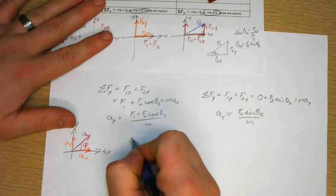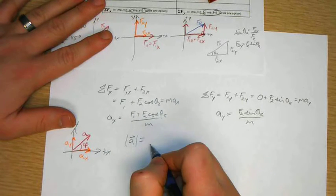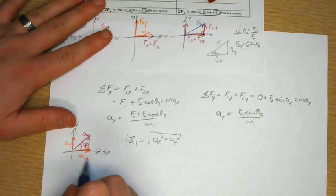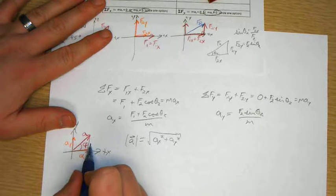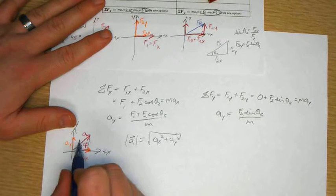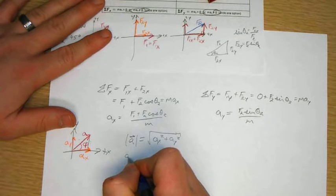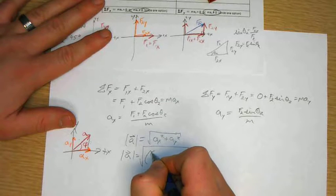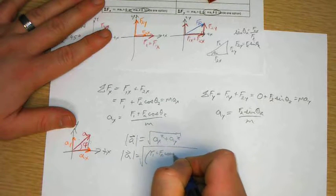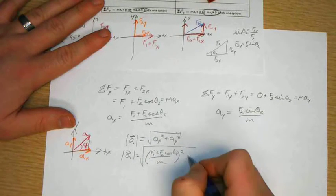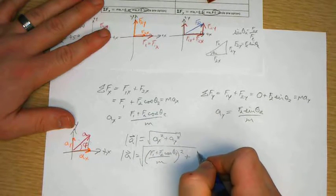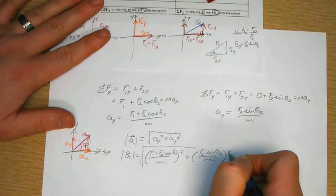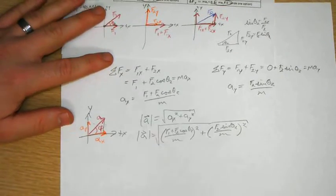Well, I know that the magnitude, remember acceleration is a vector, the magnitude is equal to ax squared plus ay squared, because this is just a right triangle. So the leg of this square plus the leg of that square equals the square of the hypotenuse. So A equals the square root of F1 plus F2 cosine theta 2 over m squared, plus F2 sine theta 2 over m squared. And you can put the numbers in there.